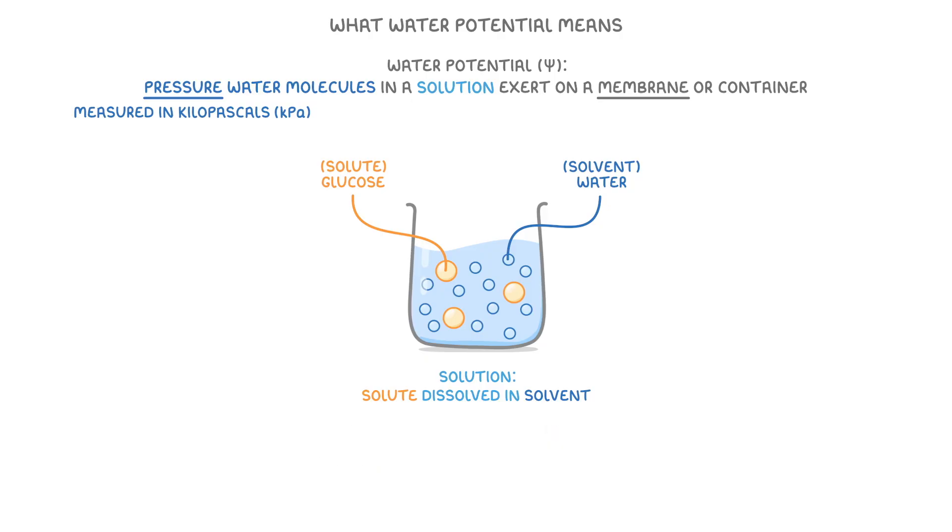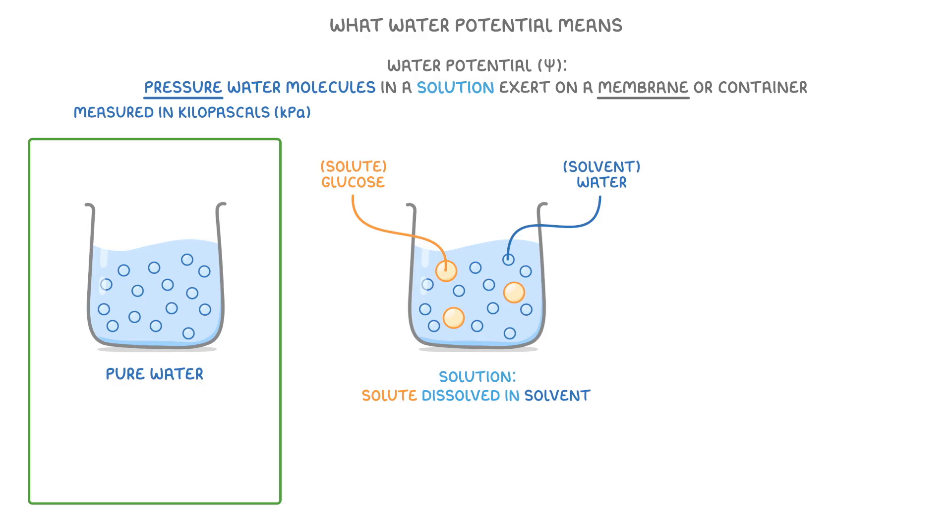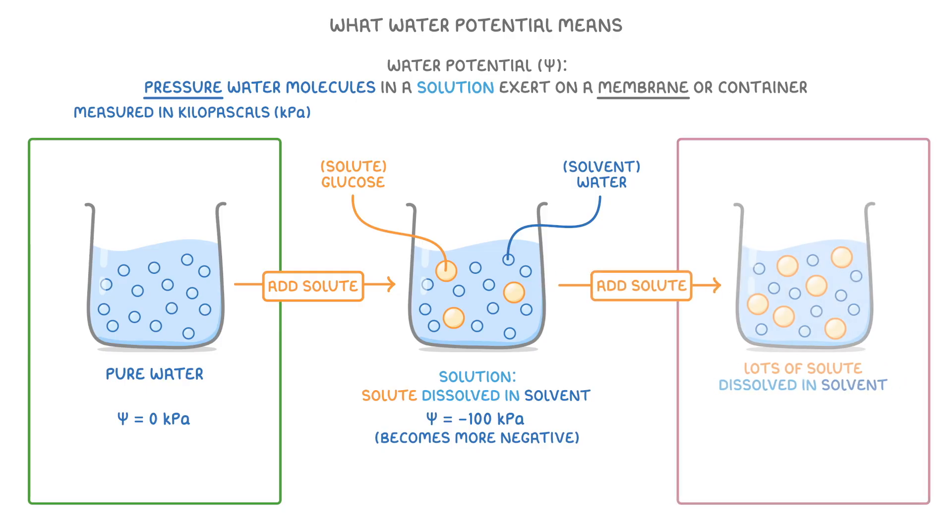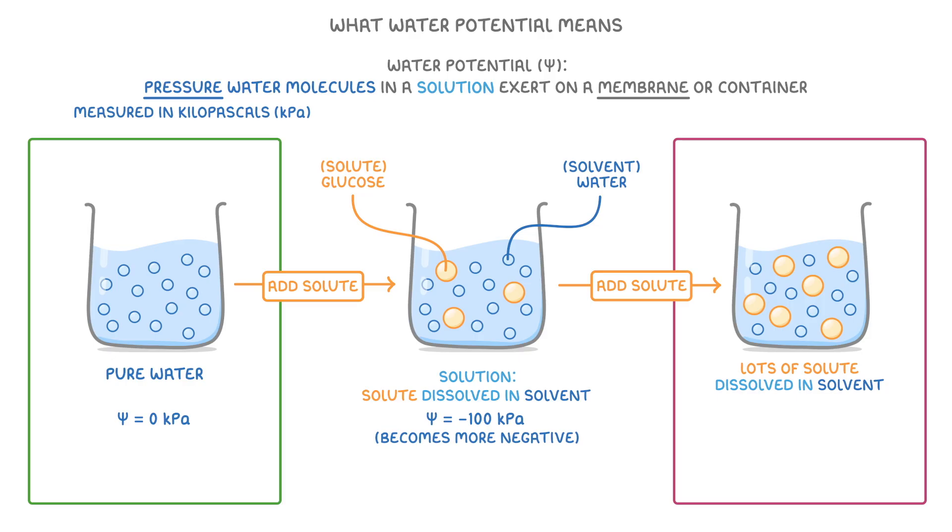Here's the interesting part though. Pure water, which is only made of water molecules, actually has a water potential of zero kilopascals. And if we add solute to it, the water potential decreases to minus 100 kilopascals. Or in other words, it becomes more negative. And if we add even more solute, so there's lots of solute dissolved in the solvent, the water potential of the solution becomes even more negative and decreases to minus 200 kilopascals.